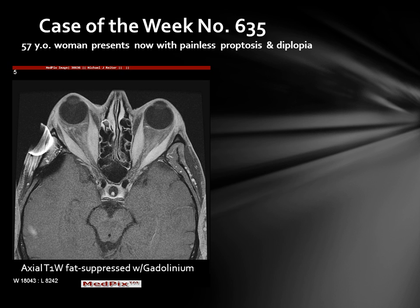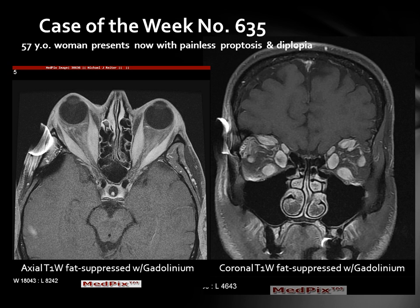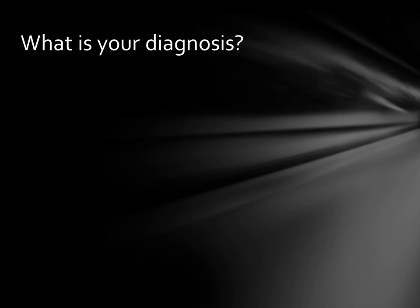Hi, I'm Jim Smyrniatopoulos and this is MedPIC's Case of the Week, number 635. A 57-year-old woman presents with painless proptosis and diplopia. We have an axial T1-weighted fat-suppressed MR with gadolinium and a coronal T1-weighted MR fat-suppressed with gadolinium. Look carefully at these two images and consider the differential diagnostic possibilities. What is your diagnosis?